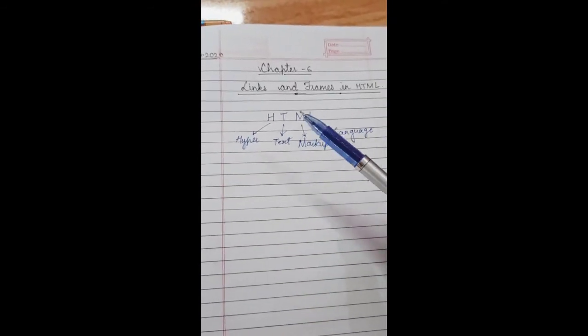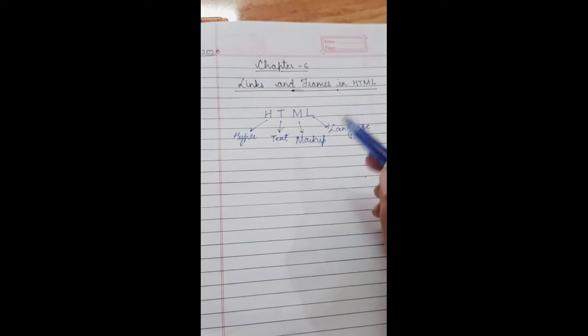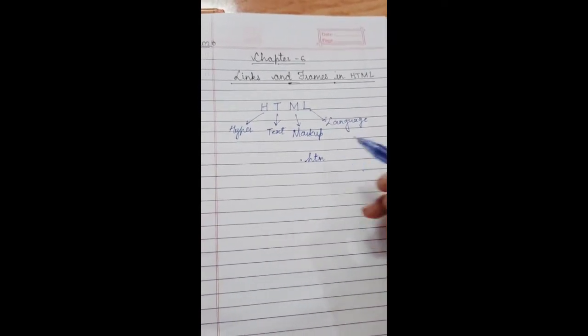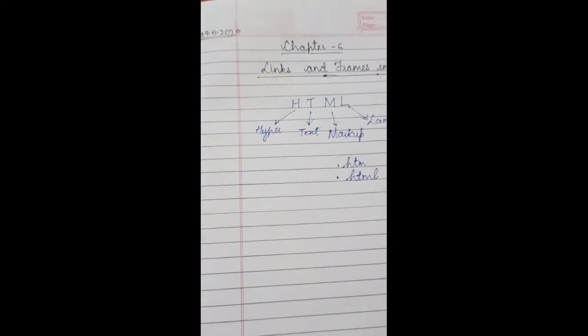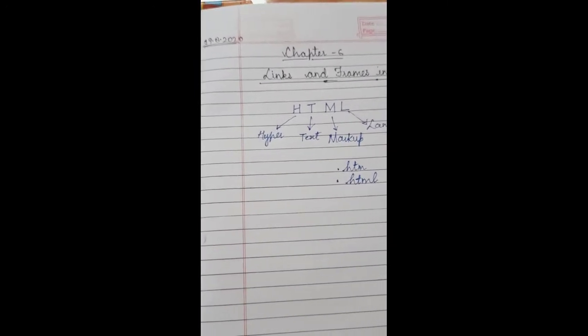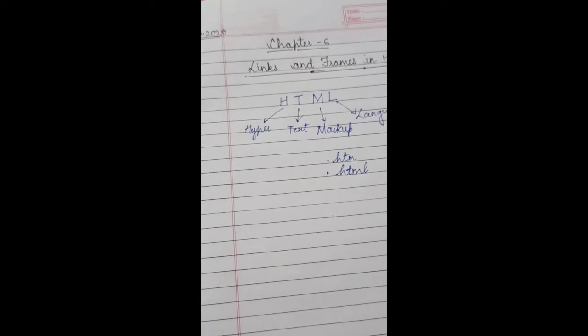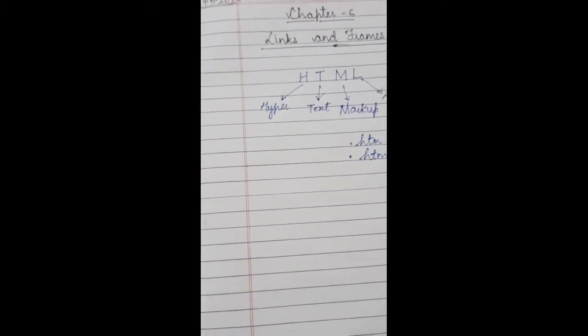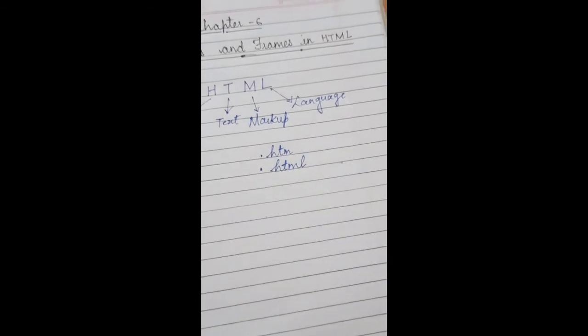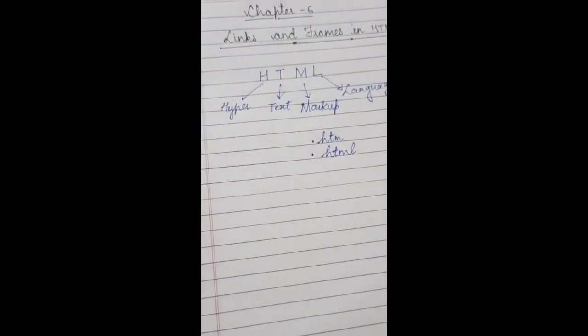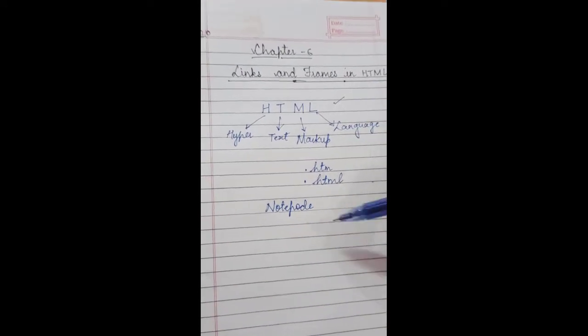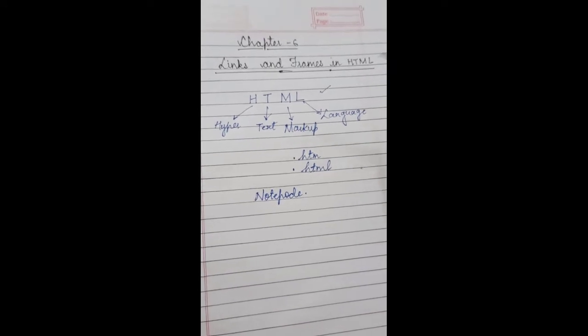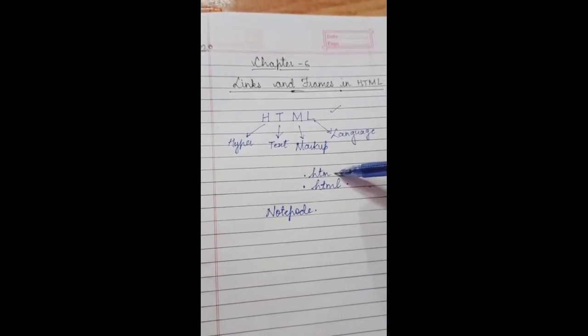Every page designed in HTML has an extension. It is saved with the extension .html or .htm. This is not a programming language, this is a markup language. To design these HTML web pages, we use notepad. We do the coding of this language on notepad and then we save it with an extension .html or .htm.